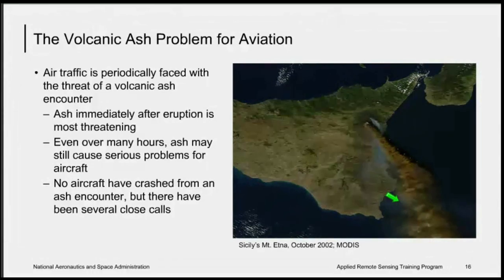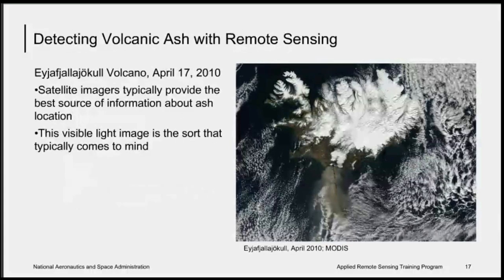In addition to pre-event monitoring, there's the hazard of volcanic ash for aviation. Air traffic is occasionally faced with this threat. We may all remember the aviation crisis caused in 2010 by the eruption of Eyjafjallajökull. Ash is most threatening immediately after the eruption; however, for a very long time afterwards the ash can hang in the atmosphere and cause problems for aircraft. As of yet there have been no crashes caused from ash encounters, but there has been significant damage to aircraft and very close calls. Detecting volcanic ash with remote sensing often brings to mind iconic images like those from the Eyjafjallajökull eruption in April of 2010.